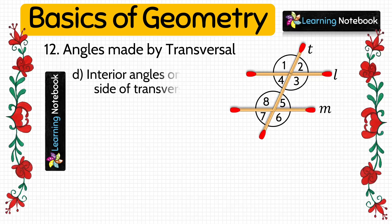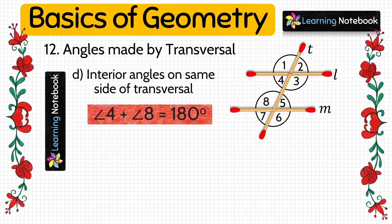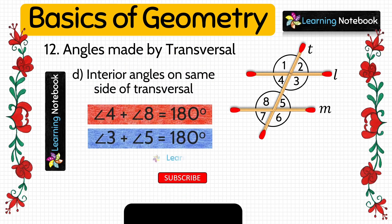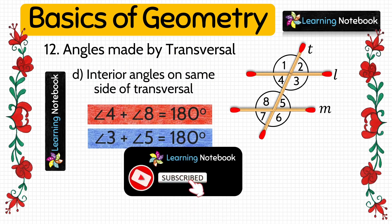The last type of angles made by a transversal are interior angles on the same side of the transversal. Here such angles are angle 4 and angle 8, and angle 3 and angle 5.